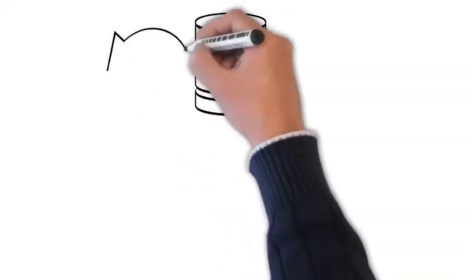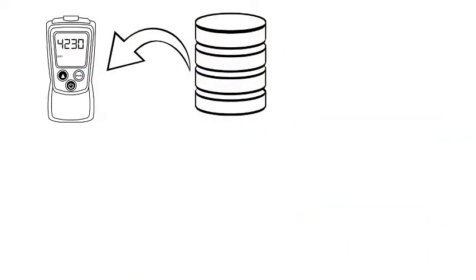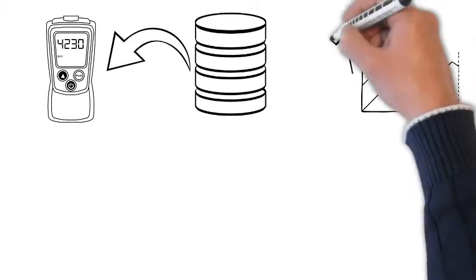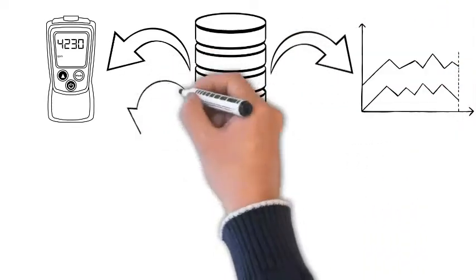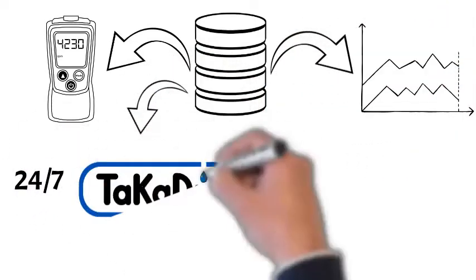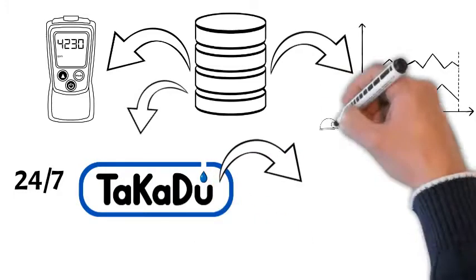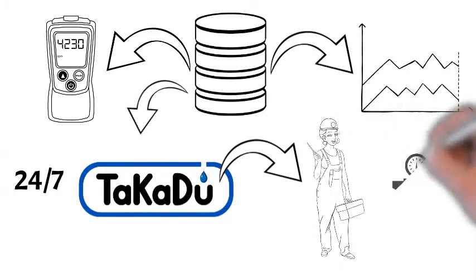By connecting your meters in near real time and employing advanced data analytics and machine learning techniques, the Takadu solution works 24-7 and automatically detects leaks early in their evolution. This makes it possible to fix them quickly and avoid a year of water loss.